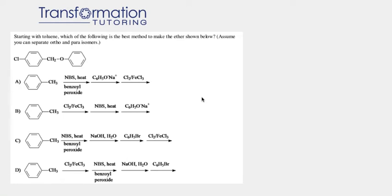In Italian, which of the following is the best method to make the ether shown below? Assume you can separate ortho and para isomers. Let's go ahead and do all of the reactions to see which sequence will give us the product that is shown here.